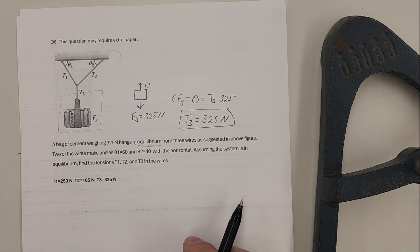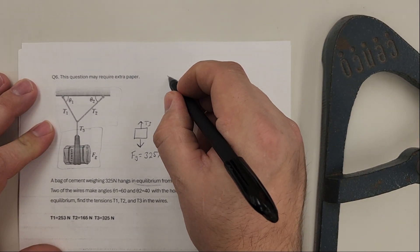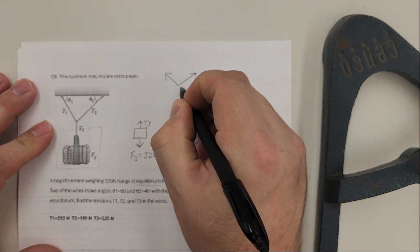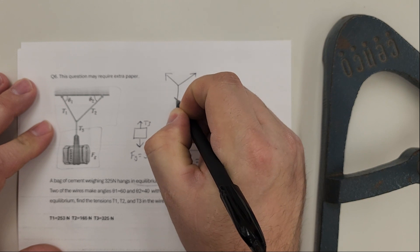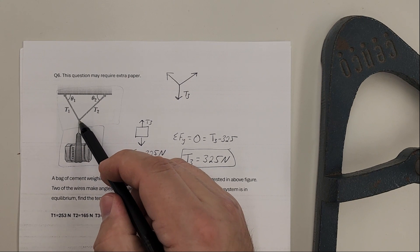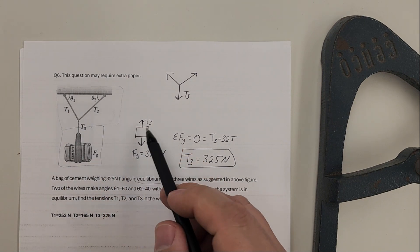To figure out T1 and T2, we have to look at the upper figure. On that one, I'm going to have T1, T2, and T3. T3 in this one points down, because the top of the wire and bottom of the wire or rope has to be in equilibrium.